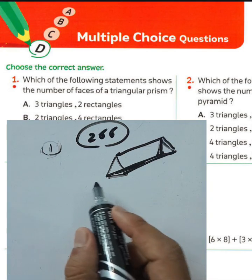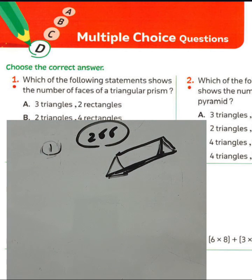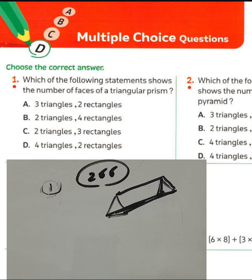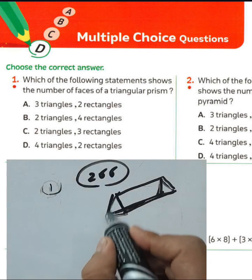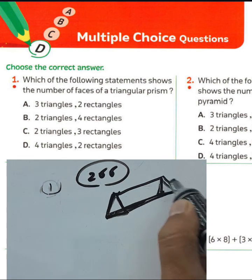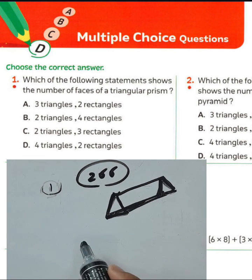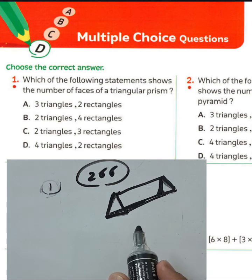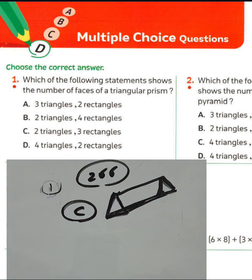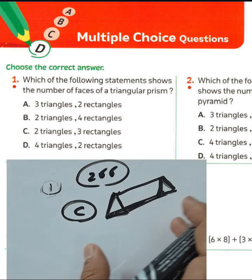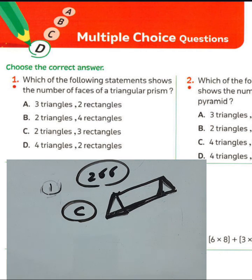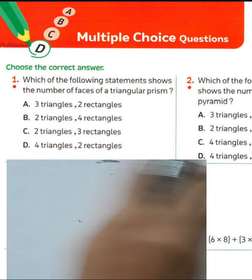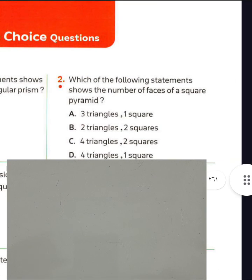Question number one: which of the following statements gives the number of faces of a triangular prism? A triangular prism has two triangles and three rectangles, which corresponds to letter C. If you want to find the area of a triangular prism, you must find the area of each face and then add the results to find the surface area. Choose letter C for question number one.